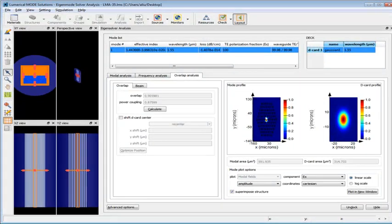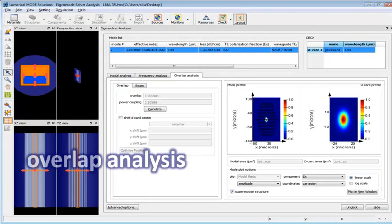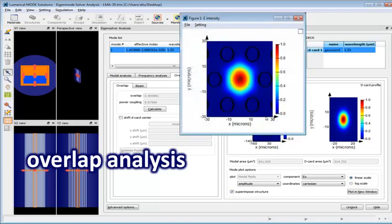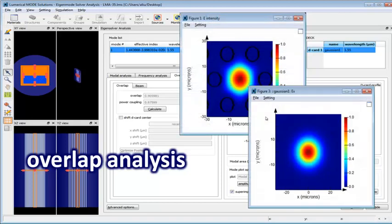Users can also calculate the overlap integral and coupling efficiency between any mode of interest with a Gaussian beam, with another waveguide mode, or with any arbitrary field profile.